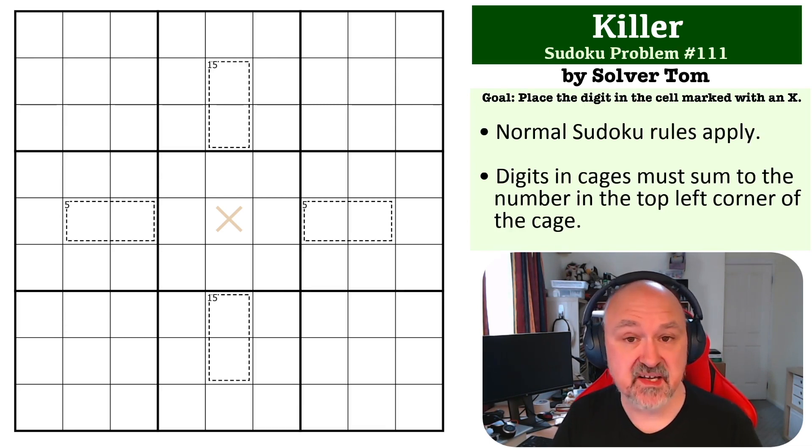The rules are killer sudoku, so digits in cages must sum to the number in the top left corner of the cage. There is a link below where you can try this one for yourself.